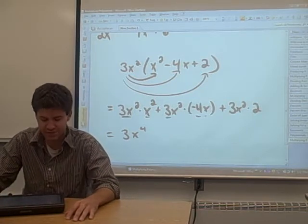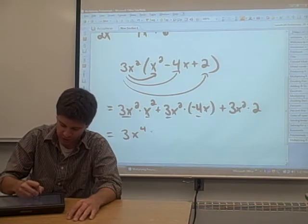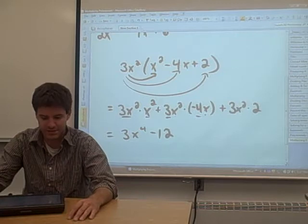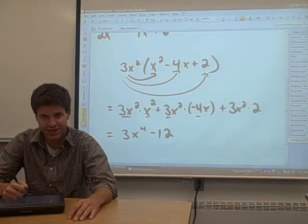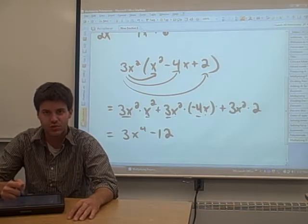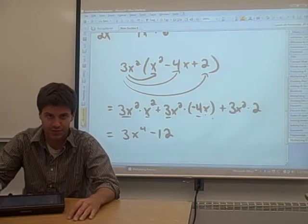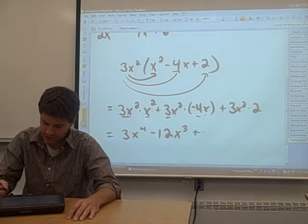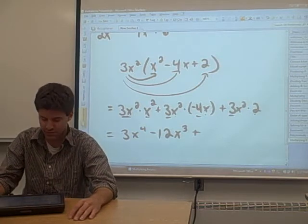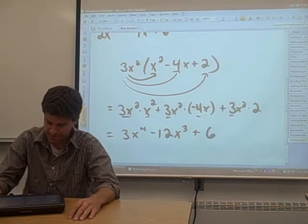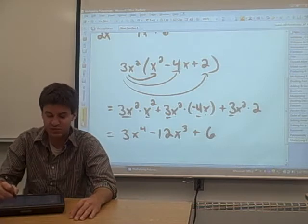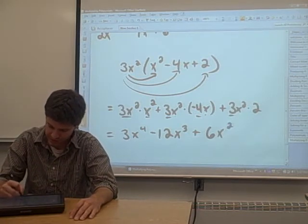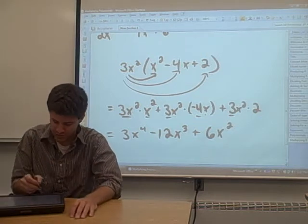Now, you're going to multiply this 3 and this negative 4 and that's going to give you a negative 12. Then, you look at the x squared and the x. x squared times x is just x to the 2 plus 1 power. From your properties of exponents again, that's just an x cubed. Go to this last term and multiply the constants. 3 times 2 is 6. And the only x term that you have in this term is an x squared. So, there's your answer.